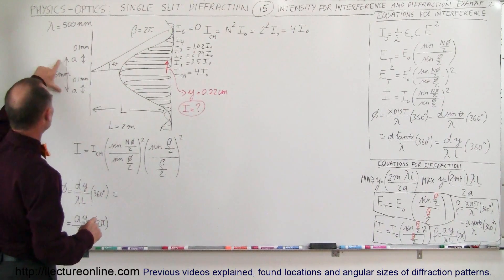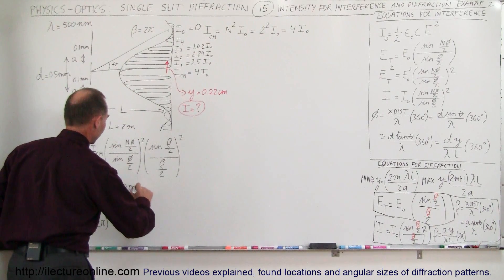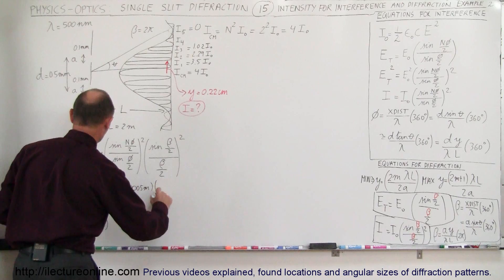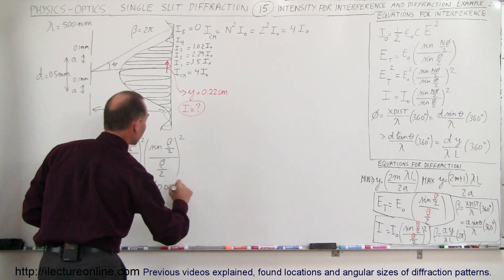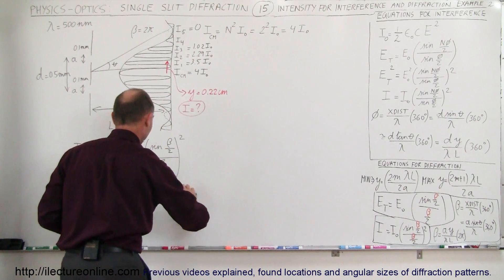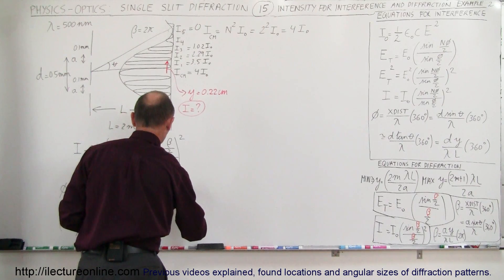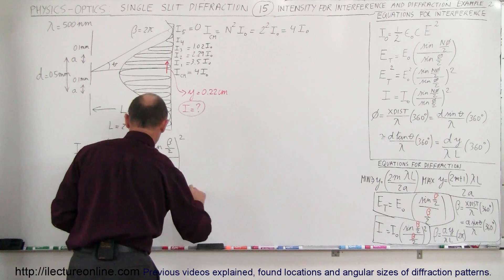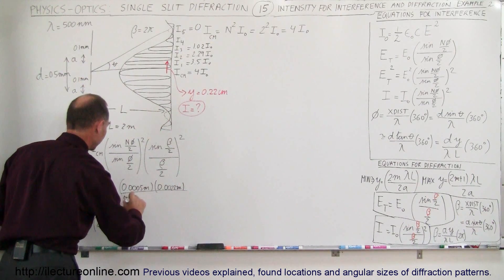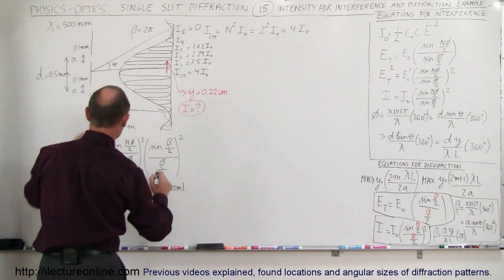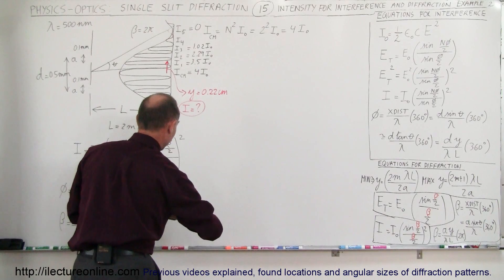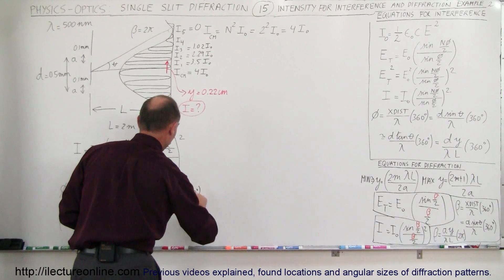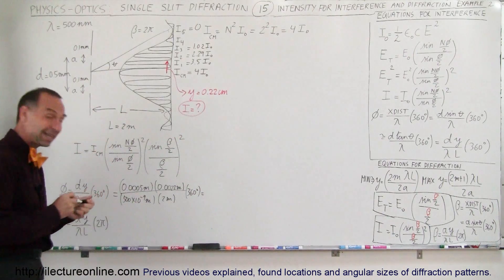So here we have the two equations — let's plug in the numbers. For the interference phase difference: D is the distance between the slits, which is 0.0005 meters, times y which is 0.22 centimeters or 0.0022 meters, divided by the wavelength which is 500 nanometers (500 × 10⁻⁹ meters), divided by the screen distance which is 2 meters, all times 360 degrees.